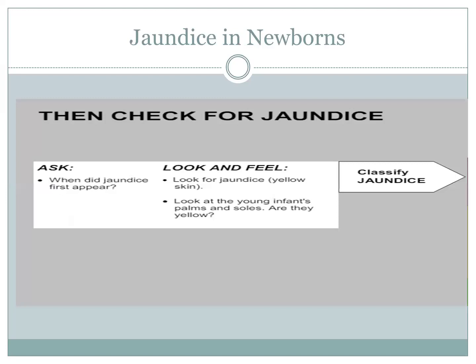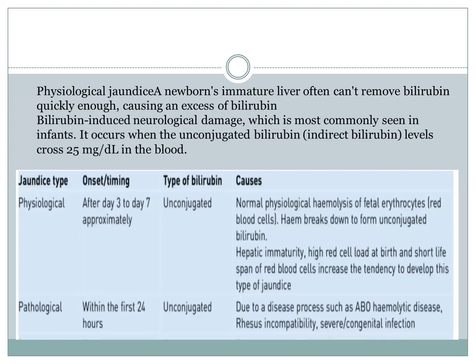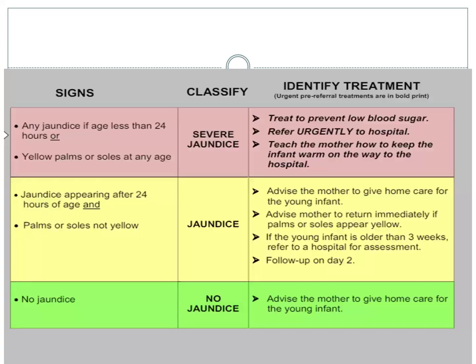For jaundice in the newborn, we ask when jaundice first appeared and look for yellowing of the skin, palms, and soles. There are two types: physiological jaundice, which appears after 24 hours, and pathological jaundice, which appears within 24 hours due to erythroblastosis fetalis where different blood groups result in maternal antibodies attacking the child's RBCs. If jaundice appears within 24 hours and is severe, the child is immediately referred and the mother is taught to keep the child warm. If after 24 hours, home care is advised and the mother returns if palms or soles are very yellow. If the infant is older than three weeks, hospital referral is done.